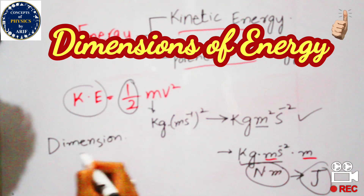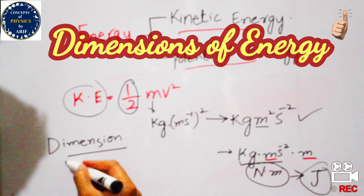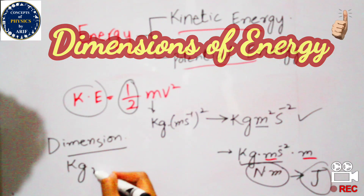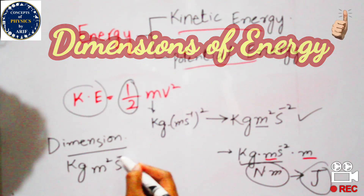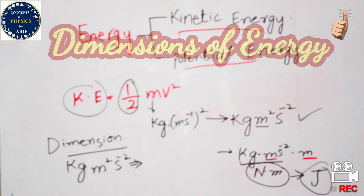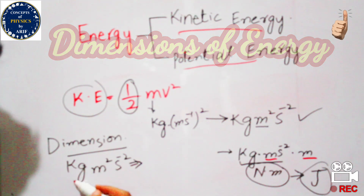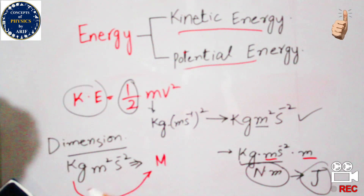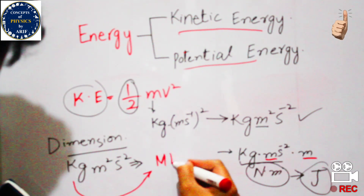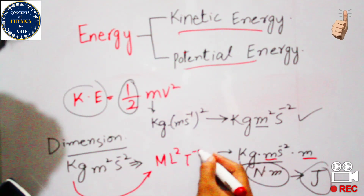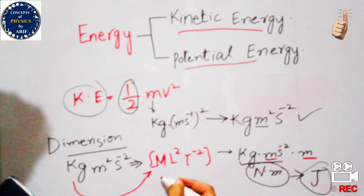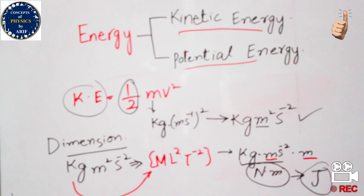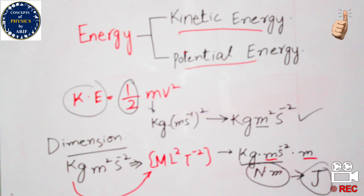The dimension of kinetic energy is kilogram meter squared per second squared, written as M L squared T to the power of minus 2. Since all forms of energy are equivalent, their units and dimensions must be the same.